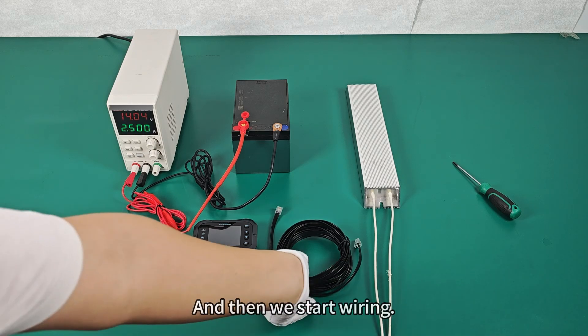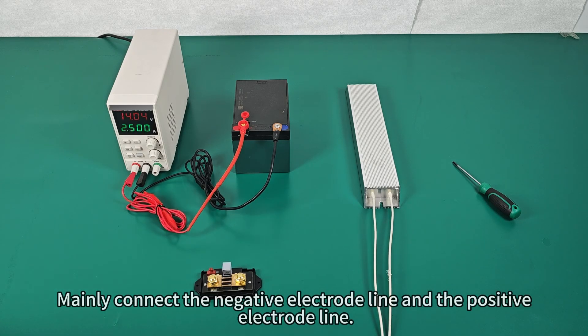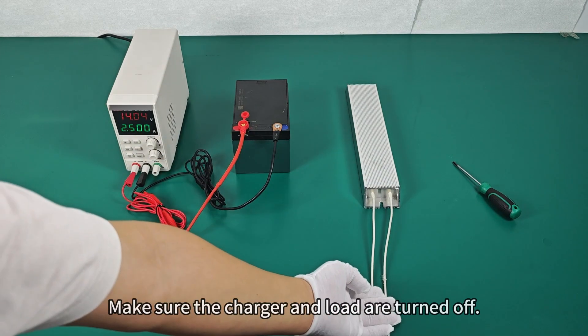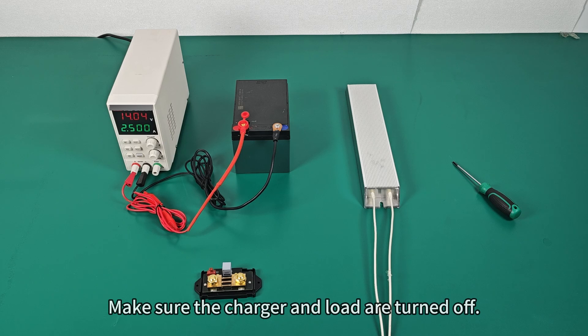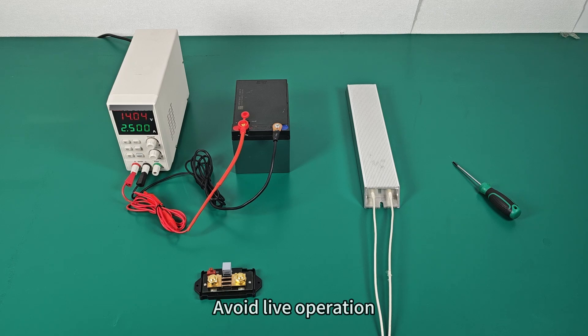And then we start wiring. Mainly connect the negative electrode line and the positive electrode line. Step 1: Make sure the charger and load are turned off. This is for secure wiring. Avoid live operation.